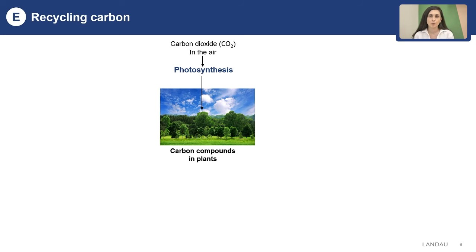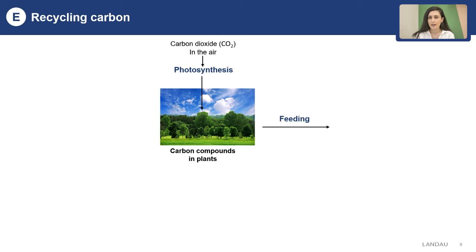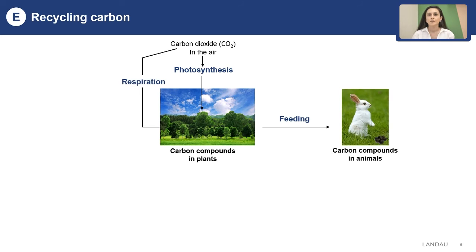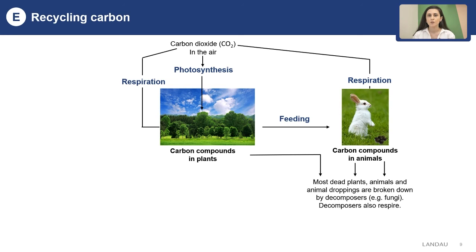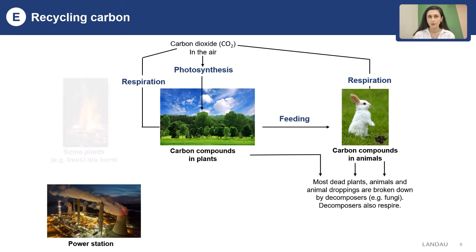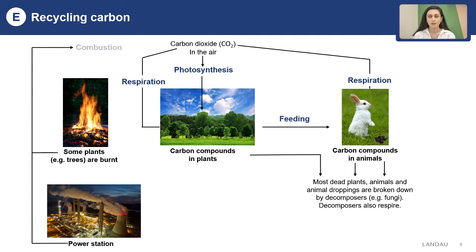Plants are also able to do respiration. When they respire, they release carbon dioxide back into the atmosphere. When plants are eaten by animals, the carbon compounds in the plants are transferred to the animals. Since animals, like other organisms, also respire, they release carbon dioxide back into the atmosphere. When animals or plants die and are decomposed by bacteria or fungi, the decomposers also respire and release carbon dioxide back into the air.